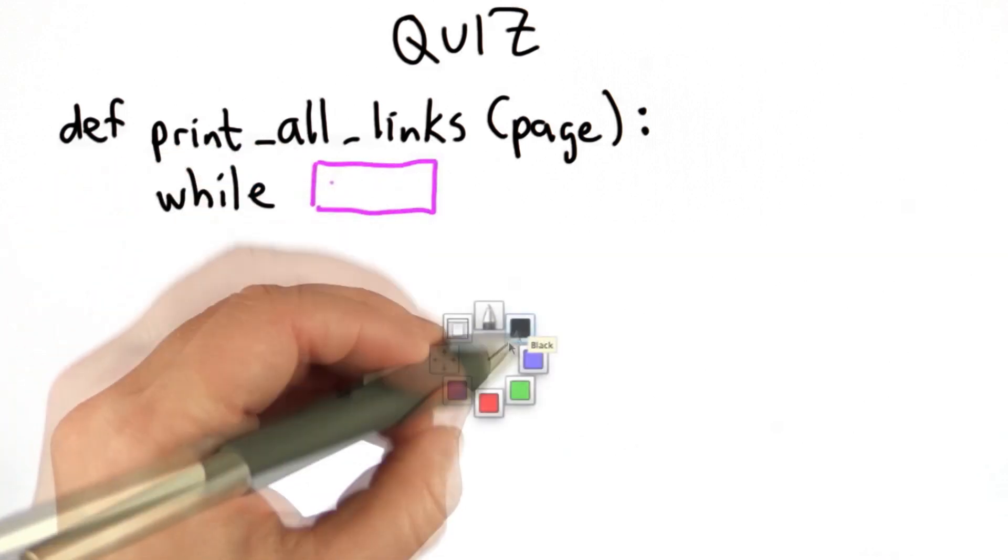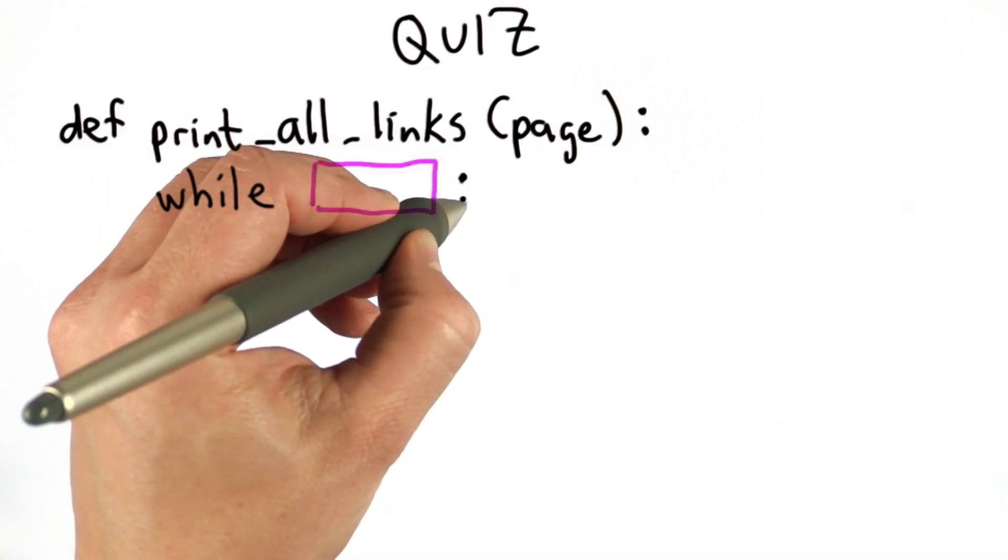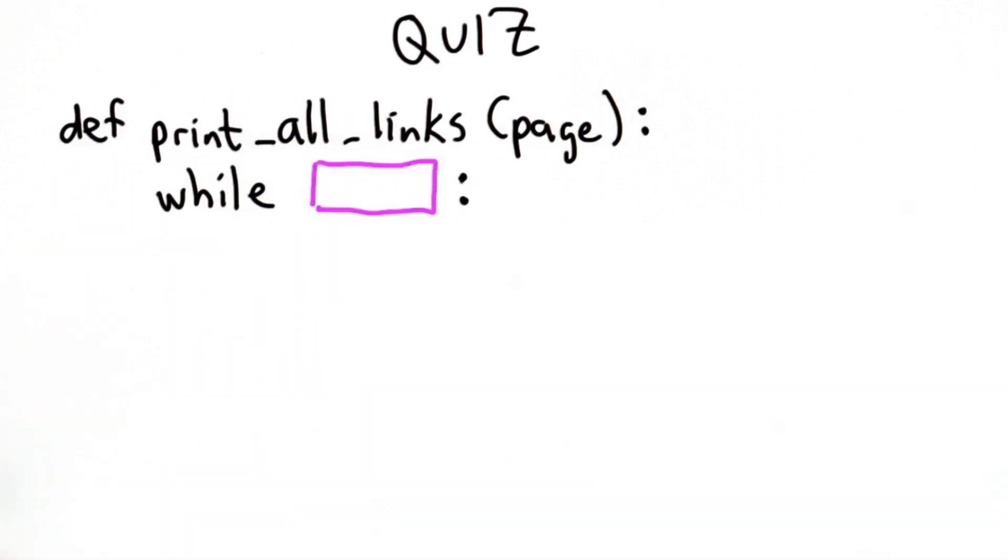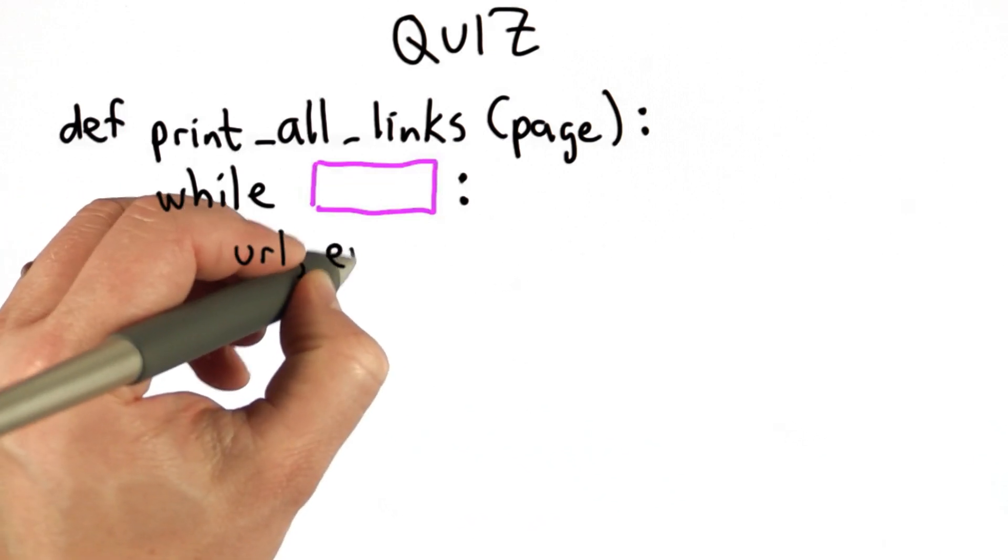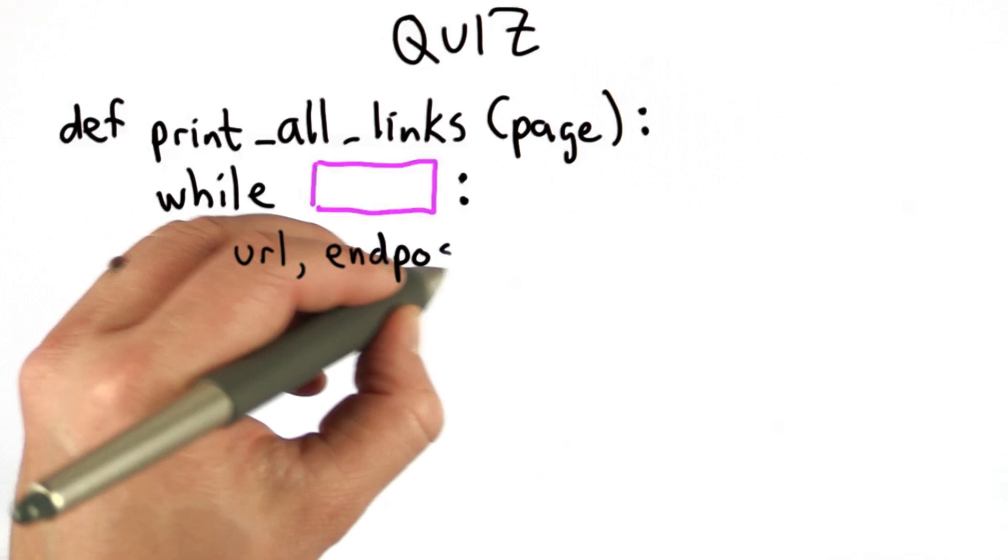We'll leave that as something for you to figure out. In the body of the while loop, we're going to call getNextTarget, assigning URL and endPause to the result. This is just like what we were doing in the example code.